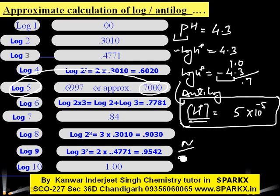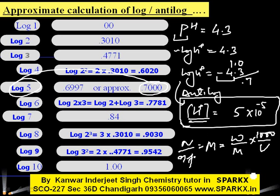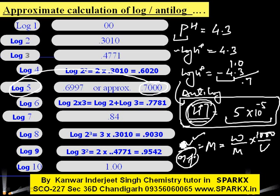If we are given normality, dividing by the n-factor gives molarity. Molarity equals number of moles multiplied by 1000 divided by volume. So this represents the normality of that particular solution. For example, for H₂SO₄ the n-factor is 2, and we can use this to calculate the mass of that particular solution.